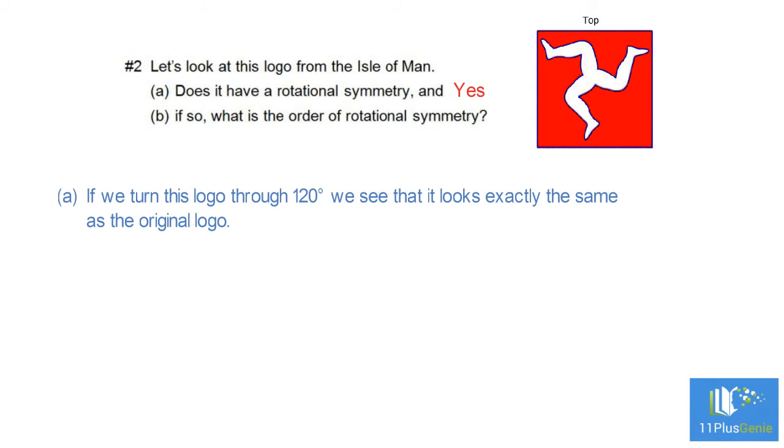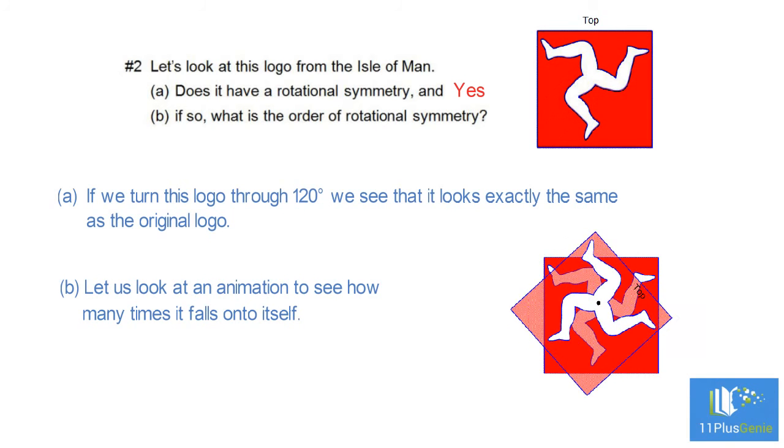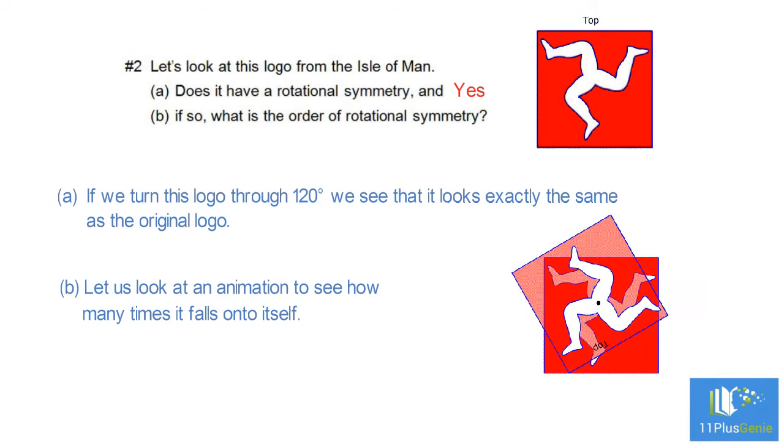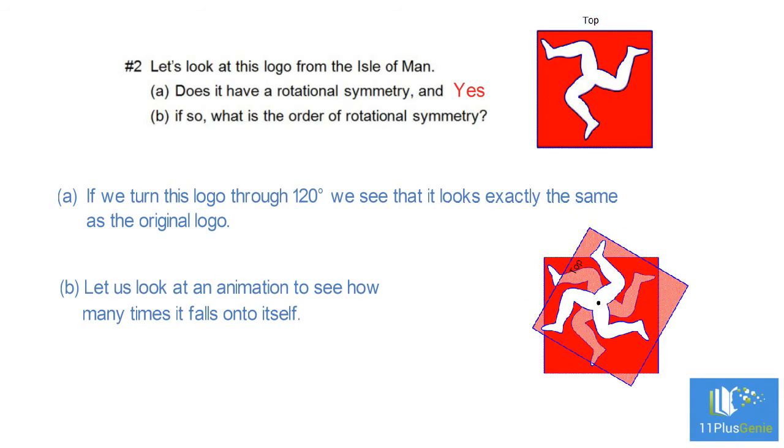To find the order of rotational symmetry we turn the image through a full turn of 360 degrees and count how many times it falls onto itself. Let us look at the animation to see how many times it falls onto itself. It falls into itself once, twice, and three times while rotating through 360 degrees. The order of rotational symmetry is 3.